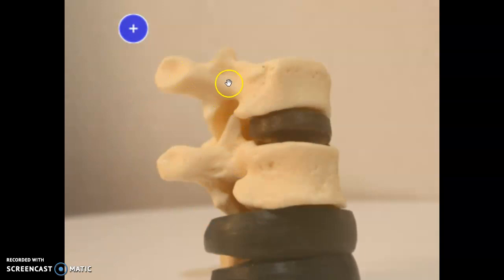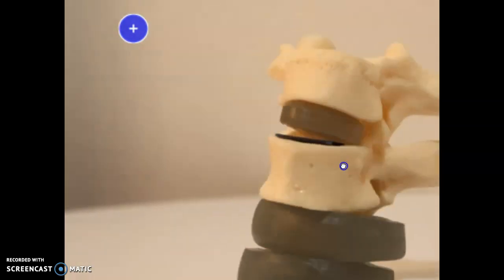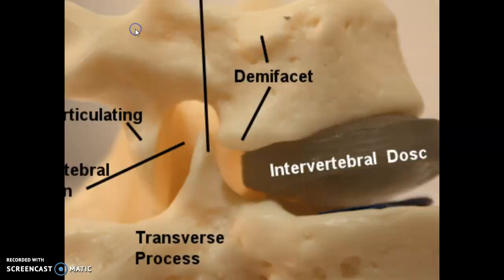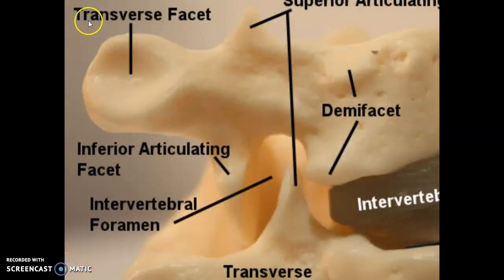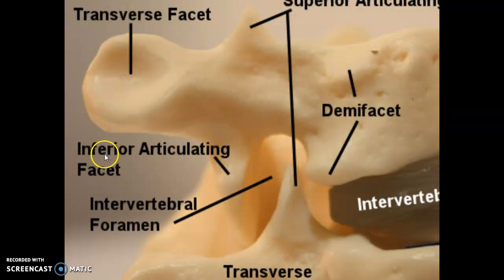Coming off the arch is the transverse process. These transverse processes have a facet called the transverse facet. Zooming in on the landmarks, there's the transverse facet. The ribs are going to have the head here between the demi-facets, a neck right here, and then a tubercle right there. That helps support the rib and allows it to lift up and down as you breathe in and out.